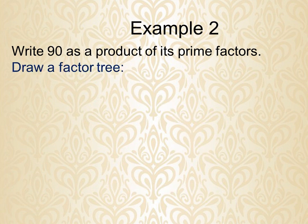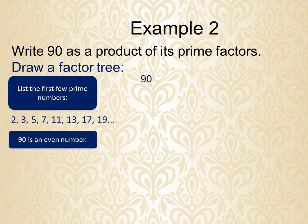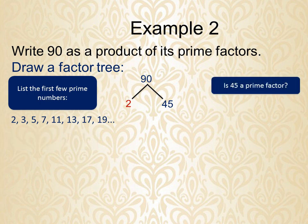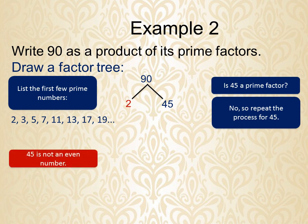This is Example 2: write 90 as a product of its prime factors using a factor tree. Since 90 is an even number, 2 × 45 = 90. Now, 45 is not a prime factor, so we repeat the process. But 45 is not an even number, so it does not come in the table of 2.